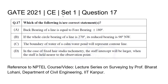GATE 2021 Civil Engineering Set 1, Question 17: Which of the following is a correct statement? This is a multiple select question. Option A: bearing of a line is equal to fore bearing plus/minus 180 degrees. Option B: if the whole circle bearing of a line is 270 degrees, its reduced bearing will be 90 degrees northwest. Option C: boundary of water of a calm water pond will represent a contour line. Option D: in the case of fixed hair stadia tacheometry, the staff intercept will be larger when the staff is held nearer to the observation point.